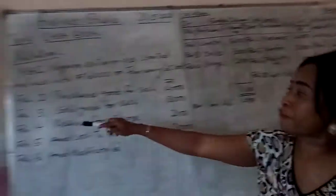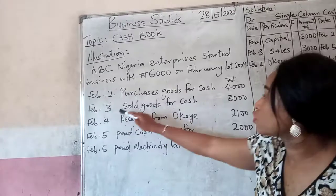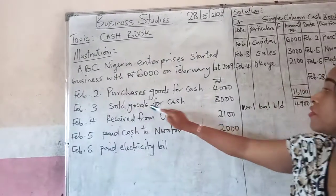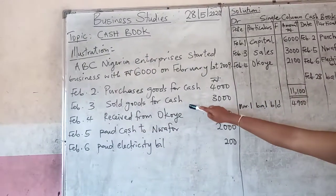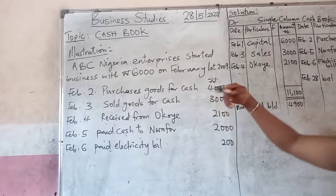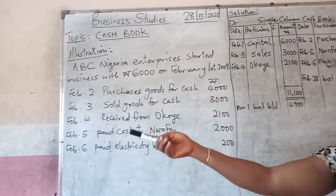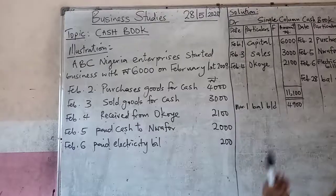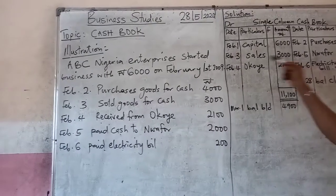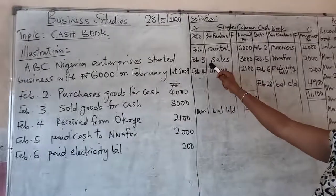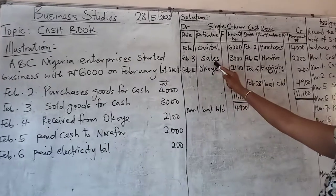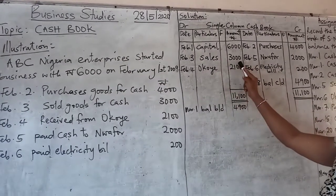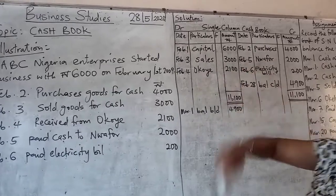Then on February 3rd, he sold goods for cash. He sold goods and received money, so it should be recorded on the debit side. That is sales: 3,000 Naira.